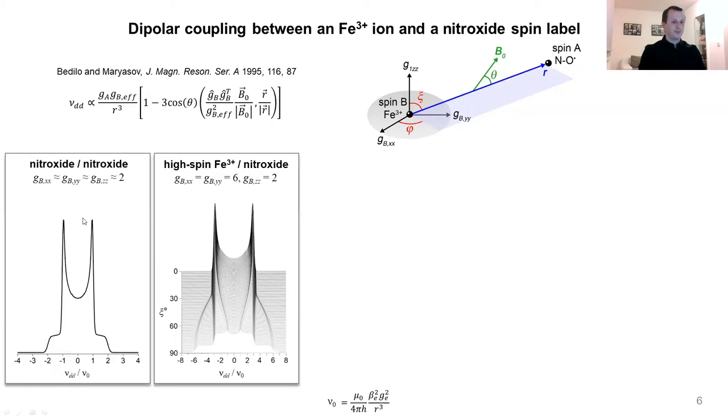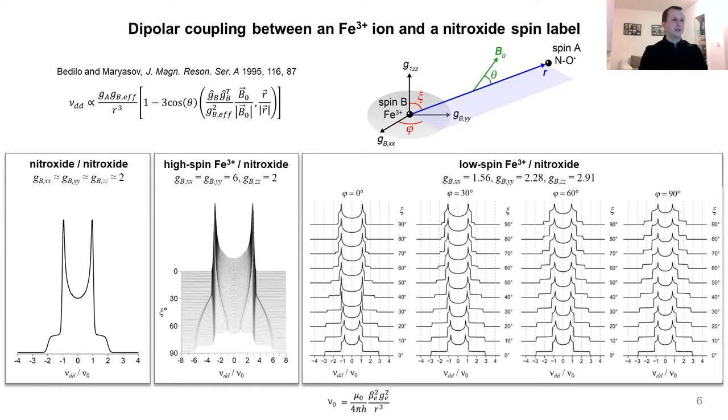Things get even more complicated when we consider the case of low-spin iron, which usually has an orthorhombic g-factor. In this case, the dipolar spectrum depends not only on the angle ξ but also on the angle φ. For all these angles, the dipolar spectra deviate significantly from the Pake doublet. What does it tell us? It tells us if we want to extract accurate distance information out of the data which we acquired on the iron-nitroxide spin pair, we need to use another theory.